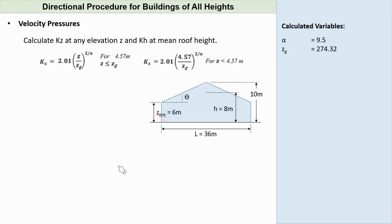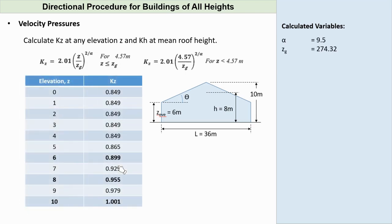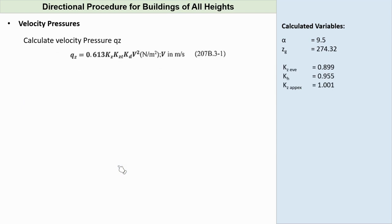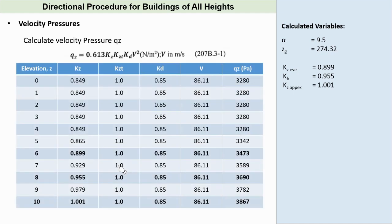Let's take a note of these values. Knowing the values of alpha and zg, we can easily calculate values of Kz at any given elevation z. Calculated values of Kz are tabulated in the table shown for elevations 0 to 10. We can observe that Kz increases as the elevation increases, but a constant value can be seen for elevations less than 4.57 meters. At mean roof height, using an elevation equal to 8 meters, we get Kh equal to 0.955. Now that we have values of Kz, we can now calculate the values of the velocity pressure Qz for elevations 0 to 10 meters. Tabulated values of Qz is shown in the right side of the table. This can easily be calculated using the given formula of Qz. Qz in the table is in newton per meter square, or pascals. Take a note of the values of Qz at the eave height, mean roof height, and at the roof apex, since we will be using these values more often.